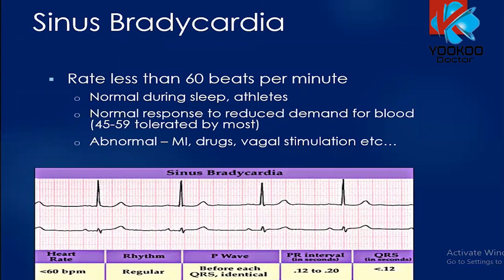Sinus bradycardia is when the rate is less than 60 beats per minute. This is normal during sleep or in athletes, and is a normal response to reduced demand for blood. It is abnormal in patients taking drugs like beta blockers, in some patients with myocardial infarction, or when there is vagal stimulation. For example, if the number of big squares between RR intervals is close to seven, 300 divided by 7 gives approximately 42 — less than 60 — with regular rhythm and normal P waves and QRS, we call this sinus bradycardia.